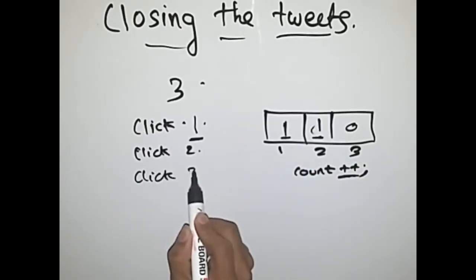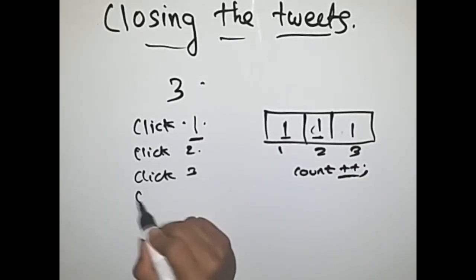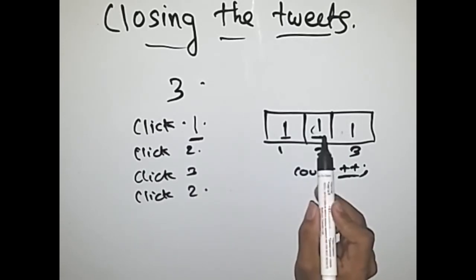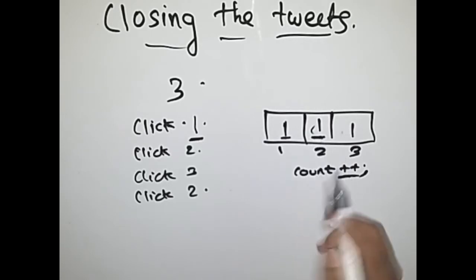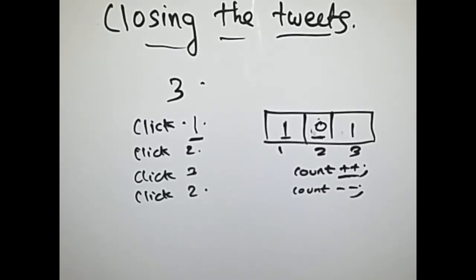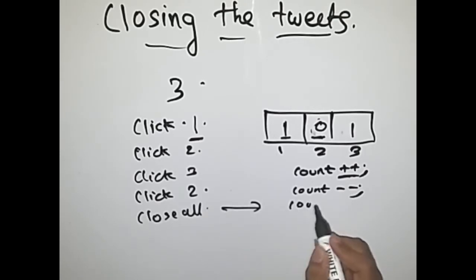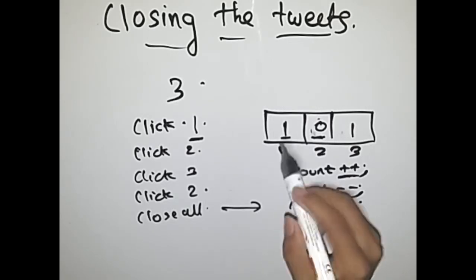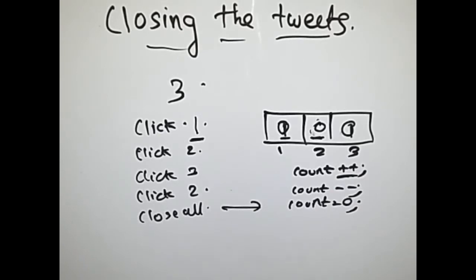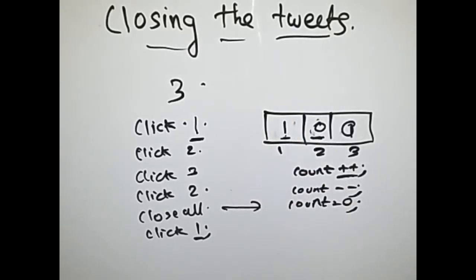'Click three': index three becomes one because it was zero, then count plus plus. Now 'click two' again — index two is already one, so we do count minus minus and make that one a zero, indicating tweet two gets closed. For 'close all', we set the count variable equal to zero and initialize all elements to zero. Then for 'click one', we set that index to one, so the final count becomes one. This is how you solve the problem 'Closing the Tweet'.